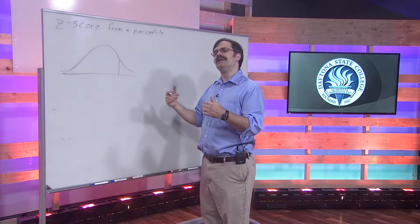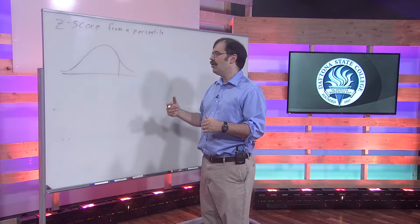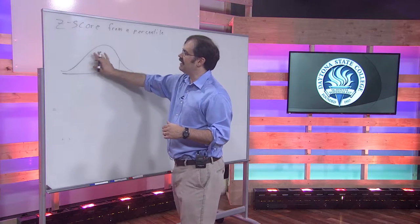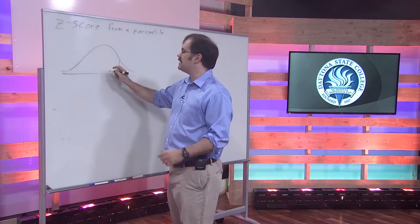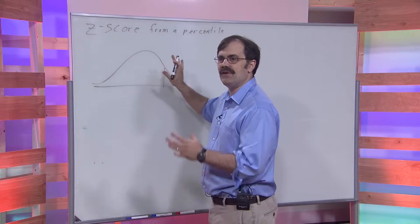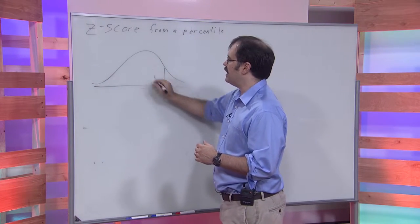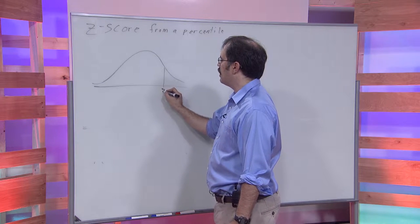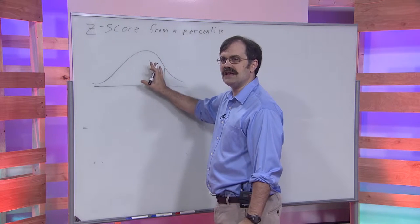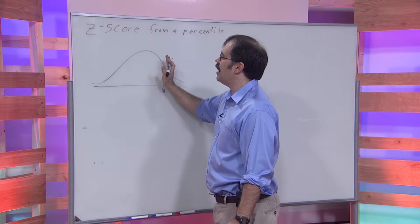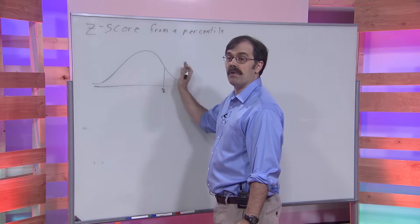This time we're going to be given the area, or in fact, because we can think of this as a probability or percentage, we're going to say: what happens if you're given a percentage and you want the z-score that has a certain percent of the population below or above this z-score?